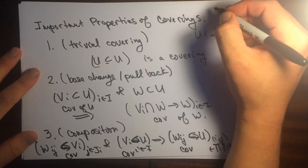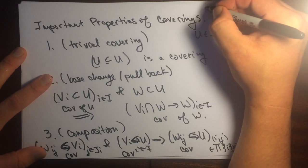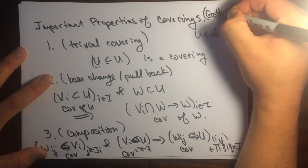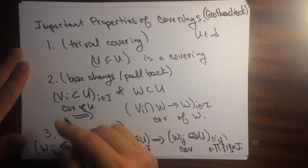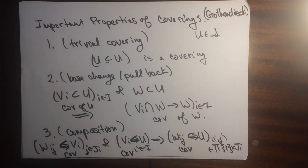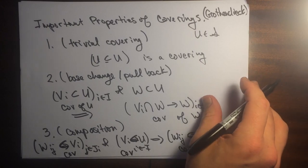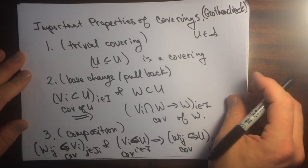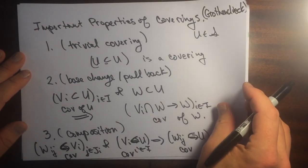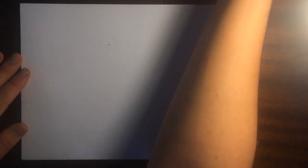So these were the important properties. And now there's a trick. The important idea about these things is that these intersections can be encoded as fiber products. So there's this intersection trick.